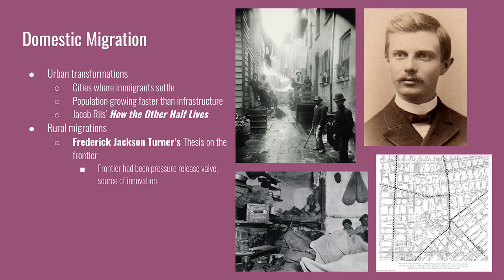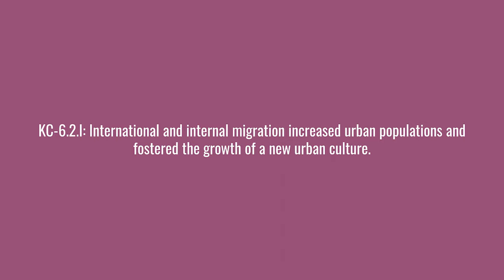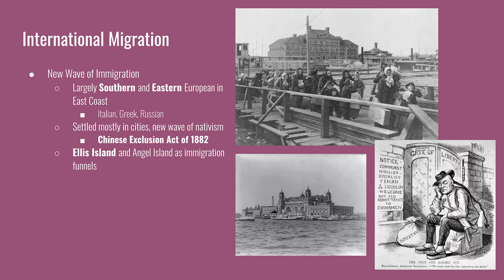There are some obvious omissions in Turner's thesis—mainly, it discounts that American Indians had been living in the frontier for centuries. The next key concept is that international and internal migration increased urban populations and fostered the growth of a new urban culture. This period is often referred to as the second wave of immigration. The first wave in the mid-19th century was characterized by German and Irish immigrants, but now a new wave of Southern and Eastern Europeans—Italians, Greeks, and Russian Jews escaping pogroms—settled mostly in cities on the East Coast.